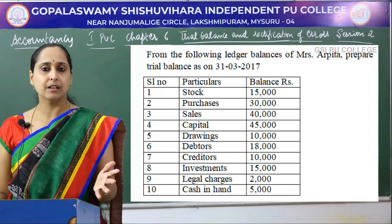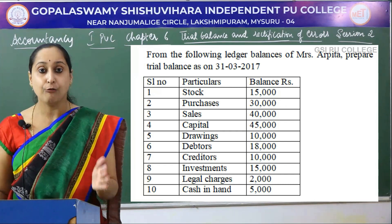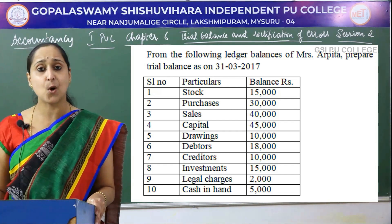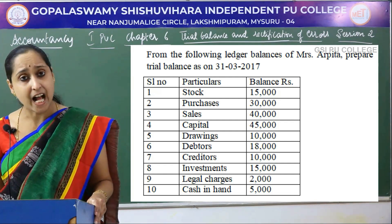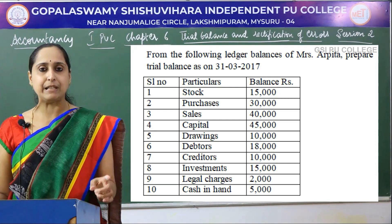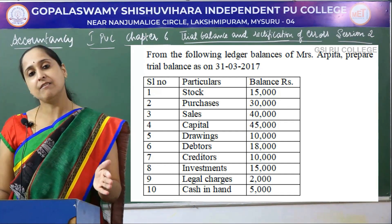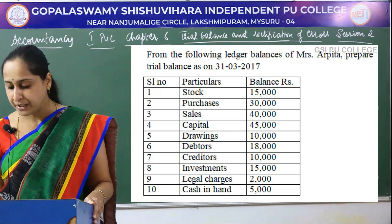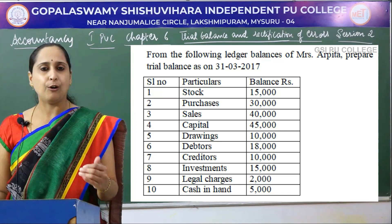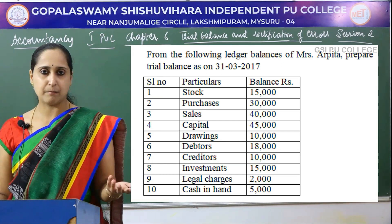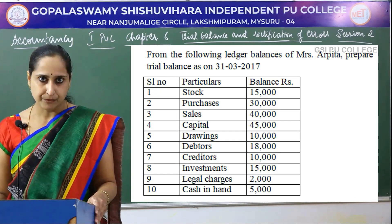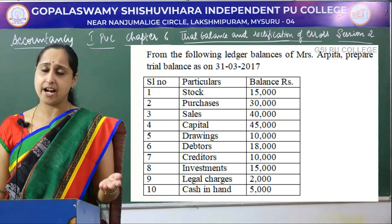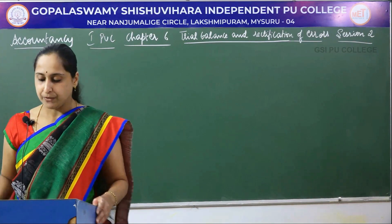Drawings — if a proprietor withdraws money from his business for personal use, we call it drawings, so here we have to record it in debit column. Next is debtors — debtors is an asset, we record it in debit column. Next is creditors — all liabilities and income we record in credit side, so creditors we record in credit column. Next is investments — investments is an asset, we record it in debit column. Next is legal charges — it is an expense for the business, so we record it in debit column. Cash in hand — again it is an asset, we record it in debit column.